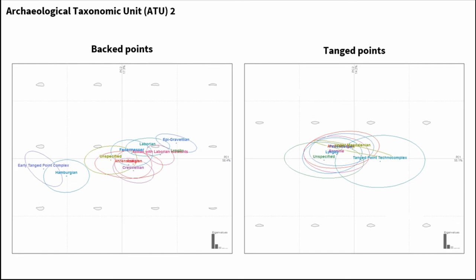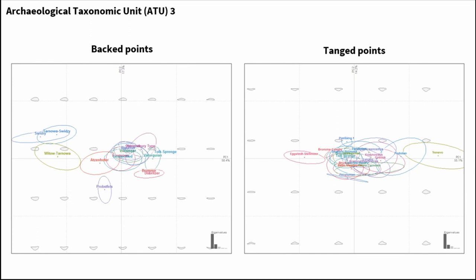For tang point variance at ATU2, less structure is present, with only significant differences noted for the Tang Point Techno-Complex and the Eastern European road. At the ATU3 scale — the level with the greatest number of different analytical units — it's a proliferation of terms. For backed point variants, Eastern European variants like the Swiderian, the Wittower, and the Tarnairian demonstrate some difference compared to other units including the Prop files and Tachsprang, which also demonstrate significant difference. The Azeno unit is perhaps the most interesting for final Paleolithic people because it's defined by the use of a non-flint material, giving insight into the relationship between raw material and shape.